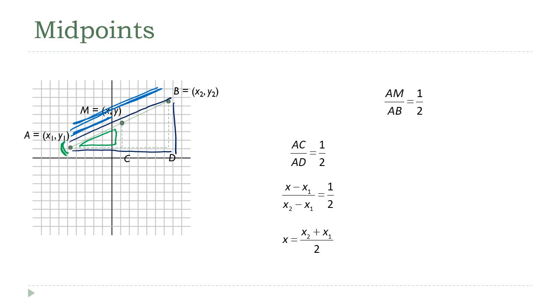Now, to get the y-coordinate, we can do the exact same thing, starting with MC and BD. That ratio also has to be one-half. If we replace MC with y minus y1 and BD with y2 minus y1, you notice we get a very similar equation. And if we solve this for y, we end up with, again, something very similar.